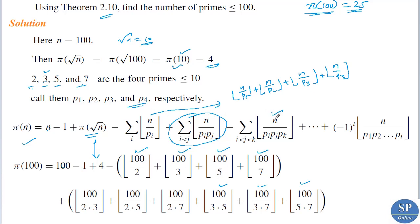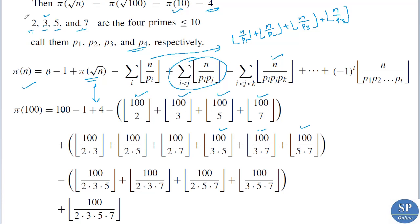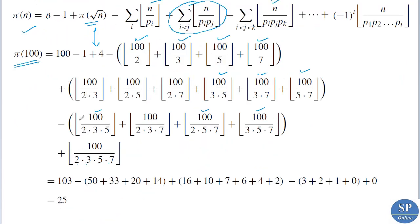Next, taking three primes at a time: − [⌊100/(2·3·5)⌋ + ⌊100/(2·3·7)⌋ + ⌊100/(2·5·7)⌋ + ⌊100/(3·5·7)⌋]. Then taking all four primes: + ⌊100/(2·3·5·7)⌋. This completes the inclusion-exclusion expansion for π(100).